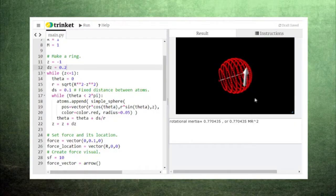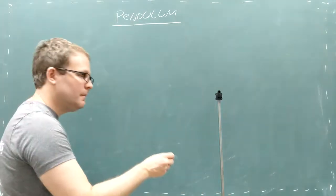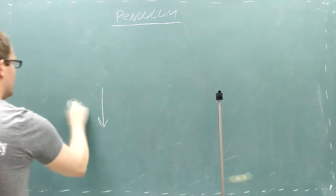We've learned that exerting a torque on a shape causes its rotational velocity to change. One important application of this principle is the pendulum, where you hang a mass from a rod.